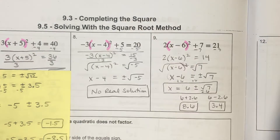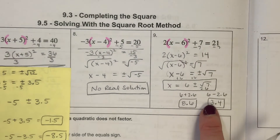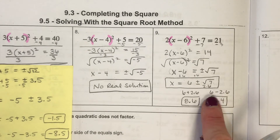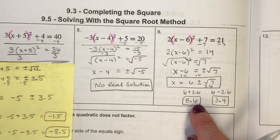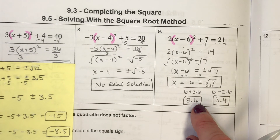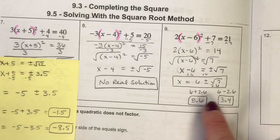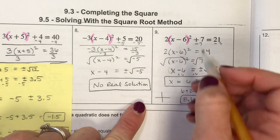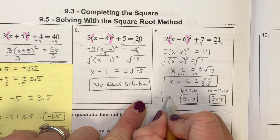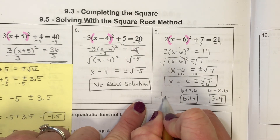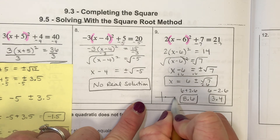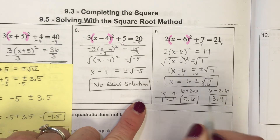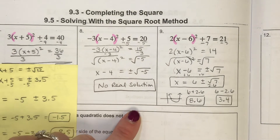Those decimal and radical answers are the same numbers. If your teacher says to graph those two roots, the decimals are easier to work with — your parabola, since this is a square, would cross at 3.4 and 8.6, and that's roughly what your parabola would look like.